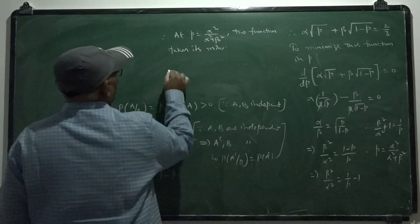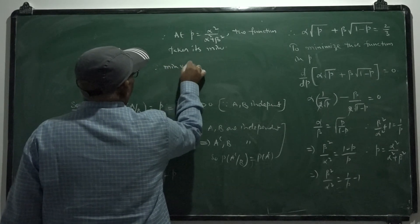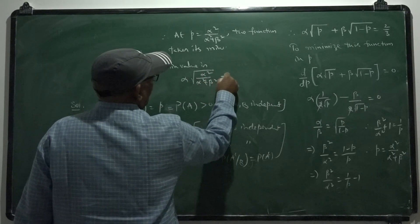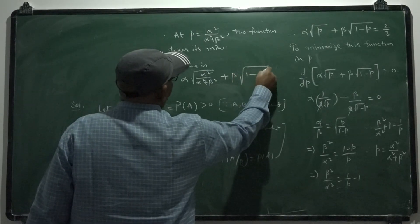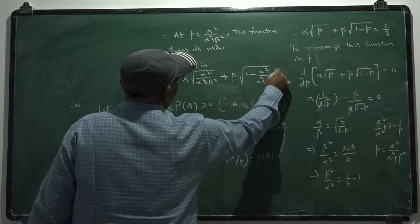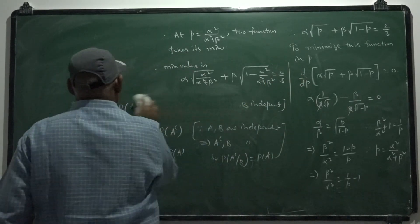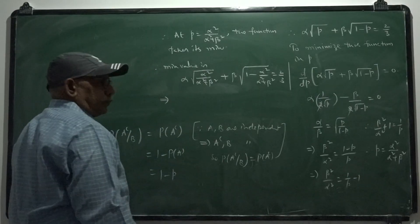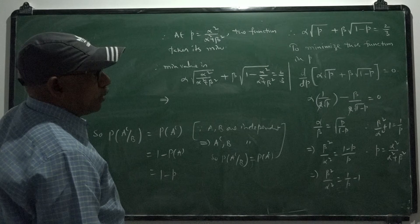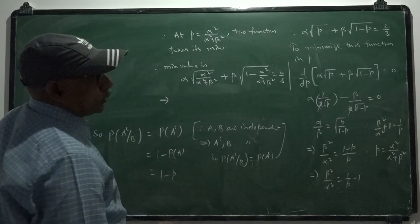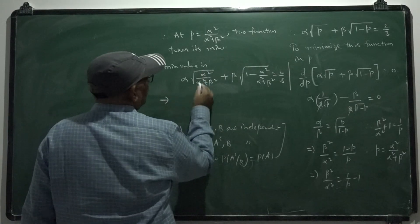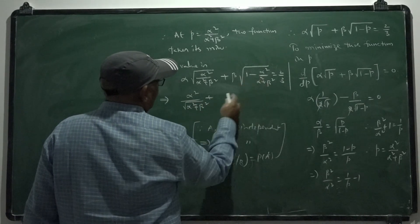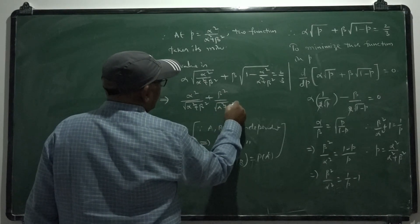The minimum value is: alpha times square root of alpha squared over alpha squared plus beta squared, plus beta times square root of beta squared over alpha squared plus beta squared, equals 2 by 3. This simplifies to alpha squared plus beta squared all over root of alpha squared plus beta squared equals 2 by 3, giving root of alpha squared plus beta squared equals 2 by 3.